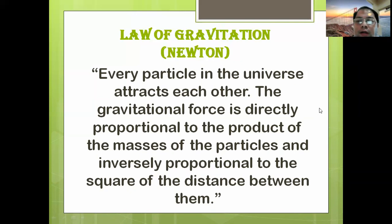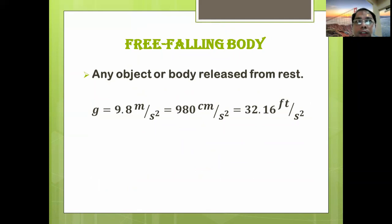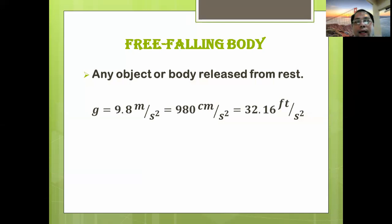When objects are lifted from the ground, they accelerate downward. From our knowledge of uniformly accelerated motion, when a body has a constant acceleration it keeps increasing its speed in a steady manner — we call it uniformly accelerated motion. One example of this uniformly accelerated motion is a freely falling body.